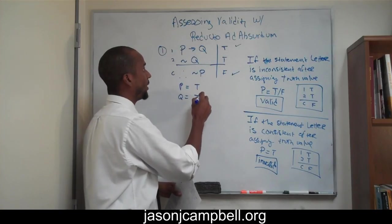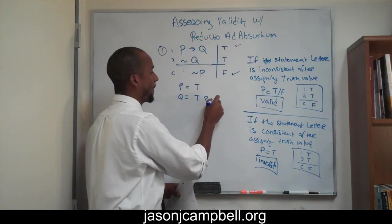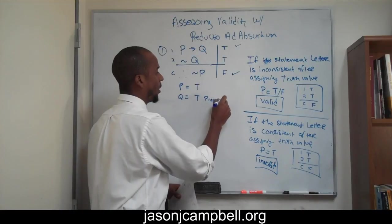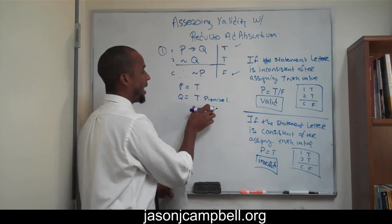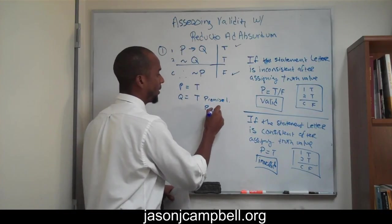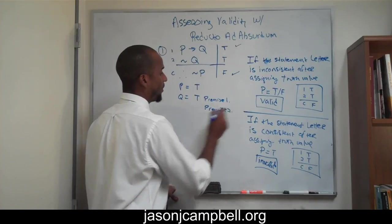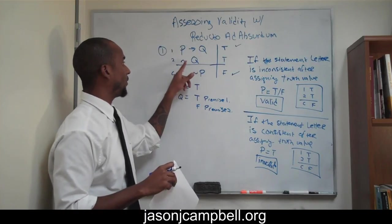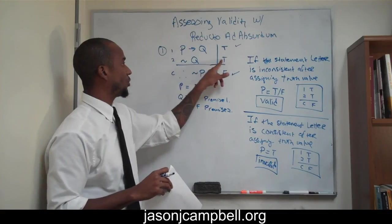So on line, on, and this would be premise one, P-R-E-M, on premise one, it would have to be true, but on premise two, it would have to be false. Not false, not false is true.